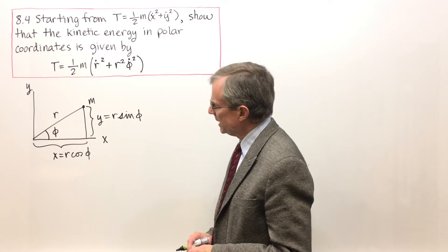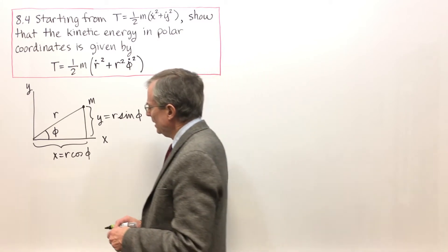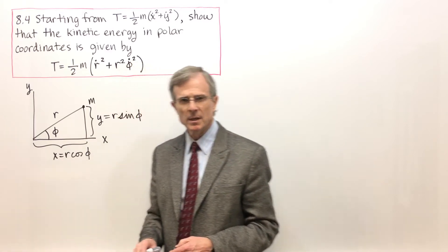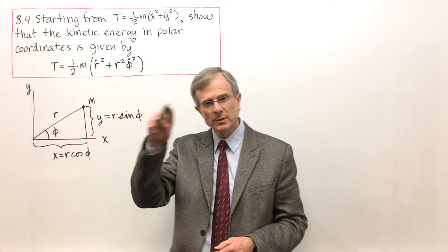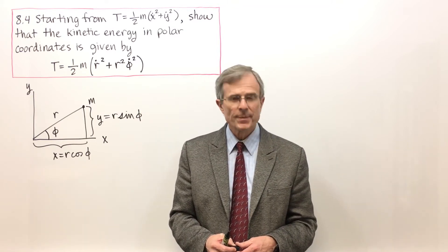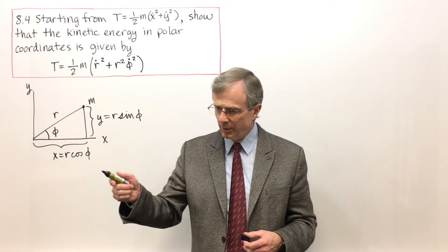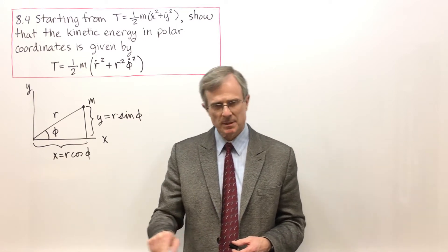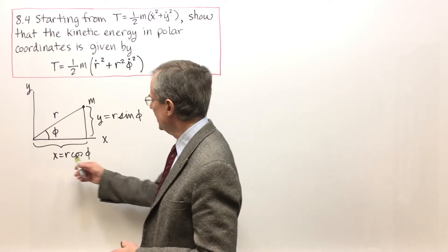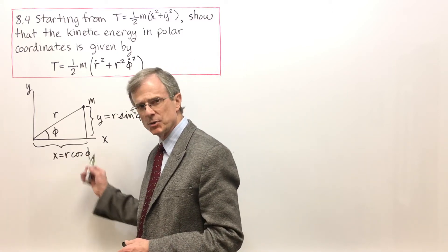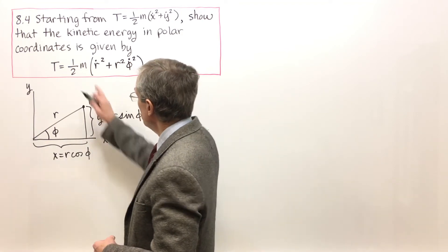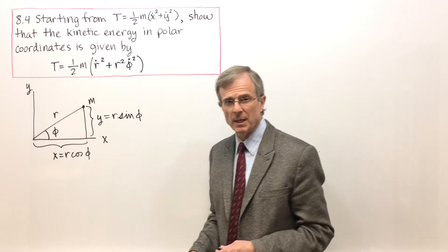We're interested in the kinetic energy, and the subtlety here is that r is not necessarily a constant. It would be for uniform circular motion, but Kepler's first law says that planets move in ellipses around the sun, so r is changing as well as phi. We have to think about both r and phi changing with time as a planet is orbiting around the sun, and we want to try and figure out what the kinetic energy is.